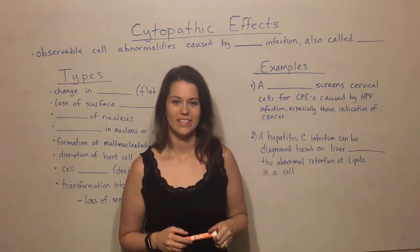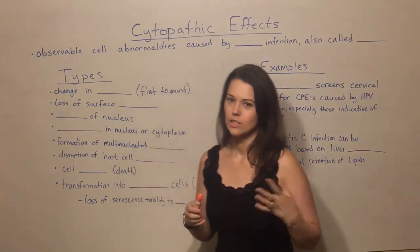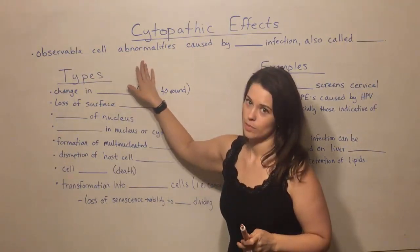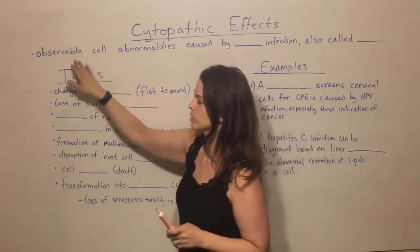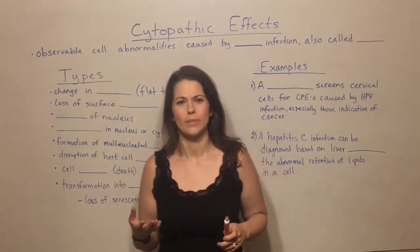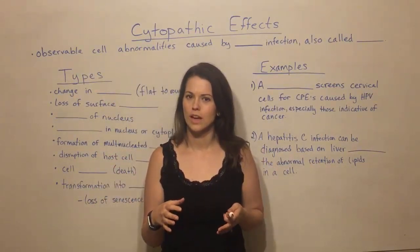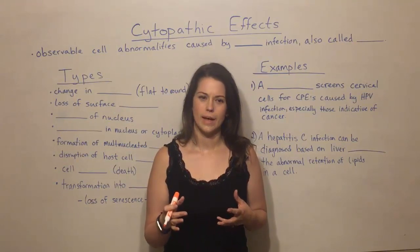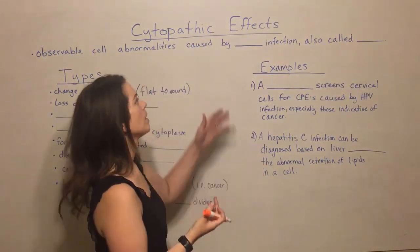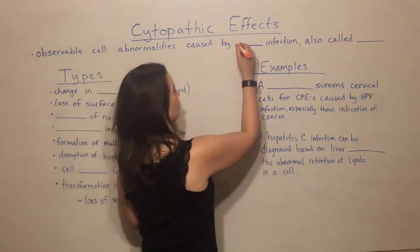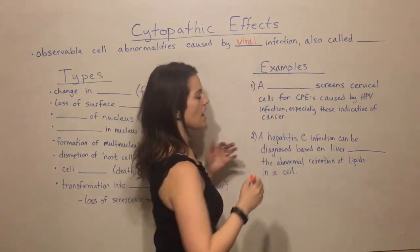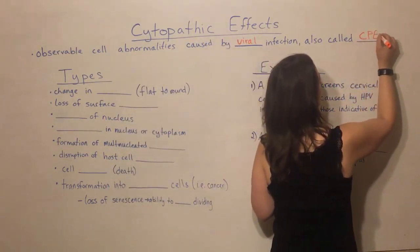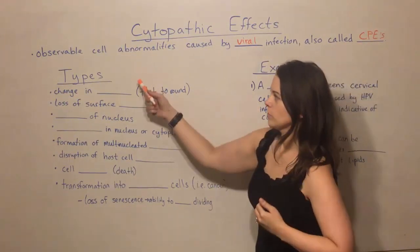Hi everyone and welcome to Biology Professor. Today we're going to be talking about cytopathic effects. So first, what are cytopathic effects? They are observable cell abnormalities — basically ways in which cells become abnormal that we can observe. Sometimes you need a high-powered microscope and special stains to observe certain cytopathic effects; sometimes you can see them on a low-powered microscope, depending on the type and cell type. These are caused by viral infections, and cytopathic effects are sometimes called CPEs.